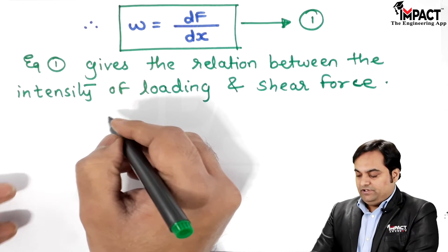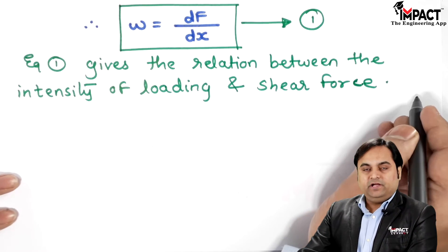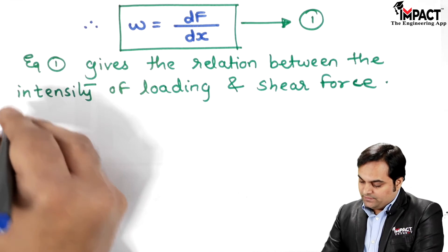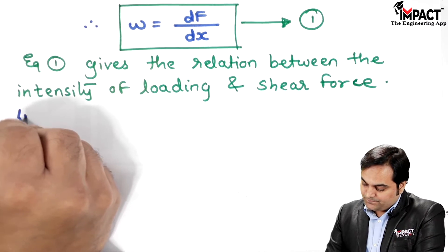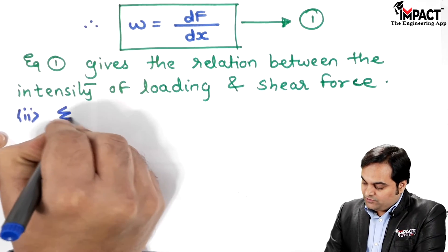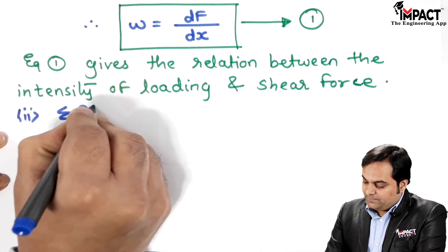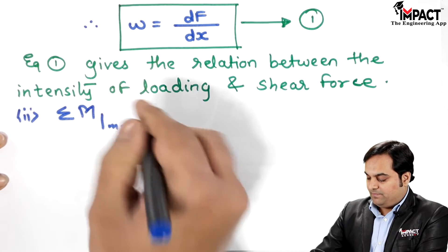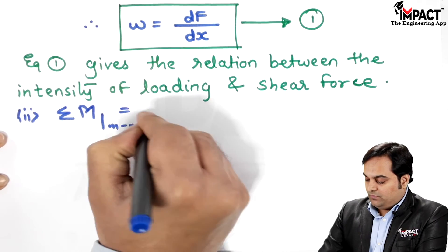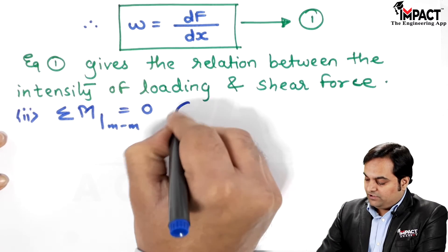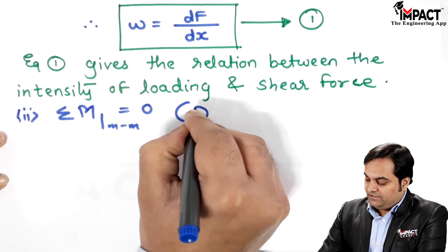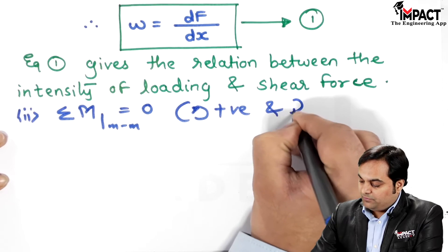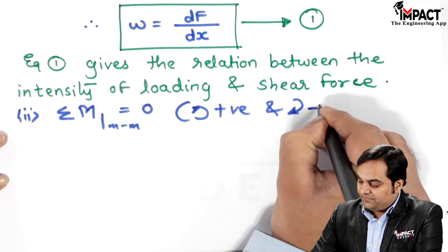Equation 1 gives the relation between the intensity of loading and the shear force. Now I will use the next condition of equilibrium: ΣM = 0, taking moments about the left-hand section MM. The convention is that anticlockwise moments are positive and clockwise moments are negative.